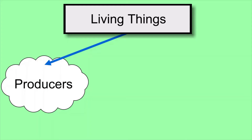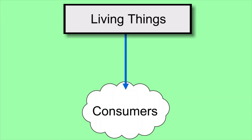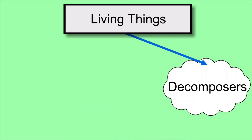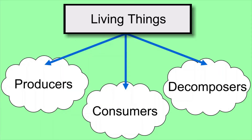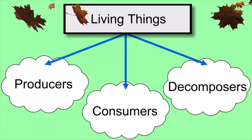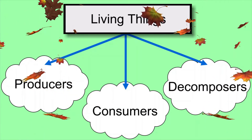Living things can be divided into three large groups. The first group is the producers, we have the consumers, and the third group are the decomposers. Producers make their own food, consumers eat other living things, and decomposers decompose or break down dead plants and animals, as well as organic waste such as animal feces, fallen leaves, and so on.